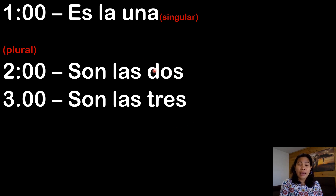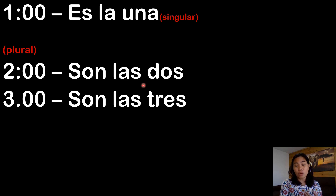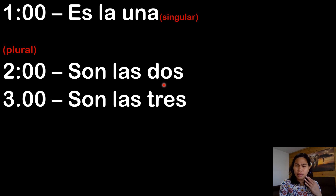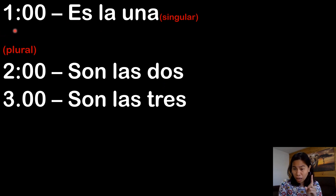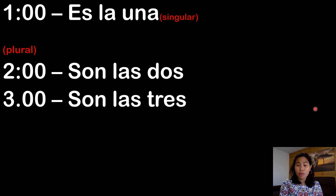So I hope that you understand es and son. Again, es and son is the verb 'be' in English — is and are. In Spanish, they call it verbo estar. Because in English, they do not change the verb from 1 o'clock to 2 o'clock — it's the same verb. But in Spanish, they change it. That is only for 1 o'clock — that's the only time they change it because it's singular.